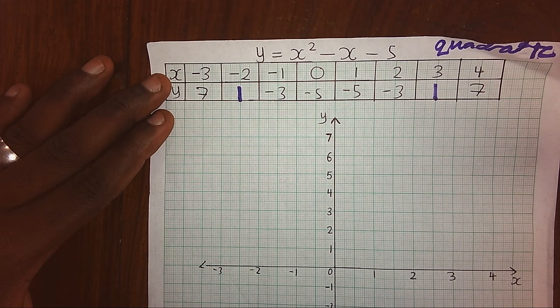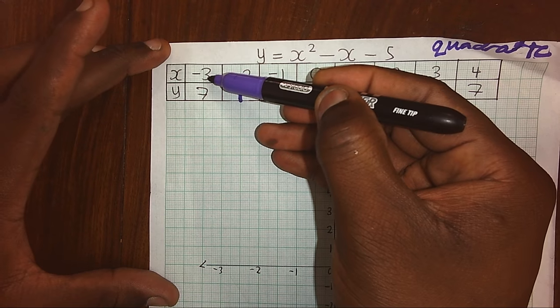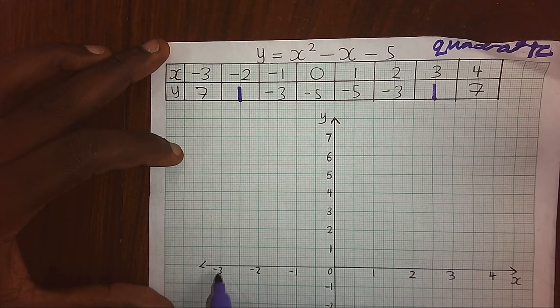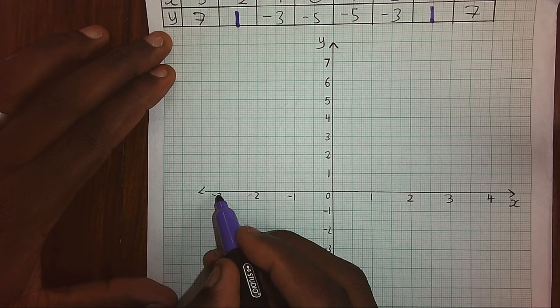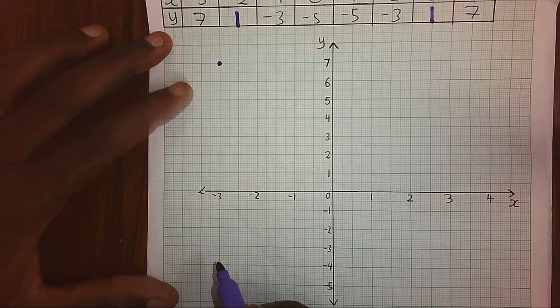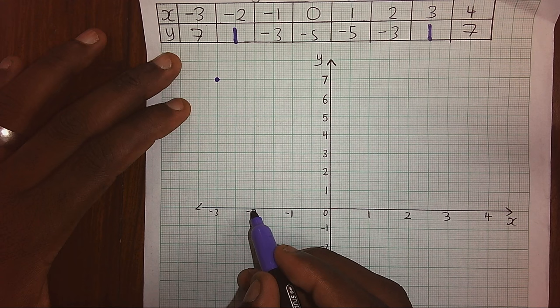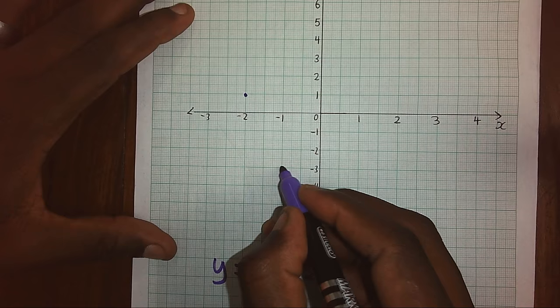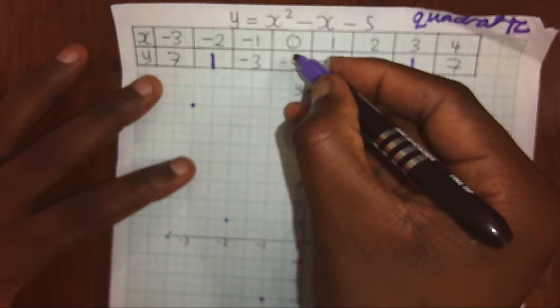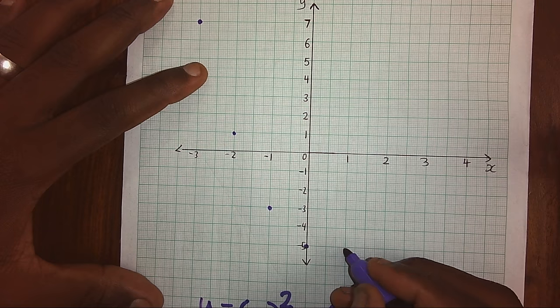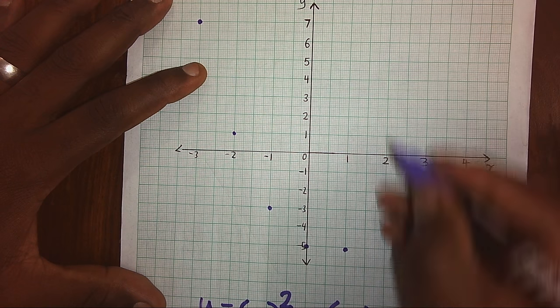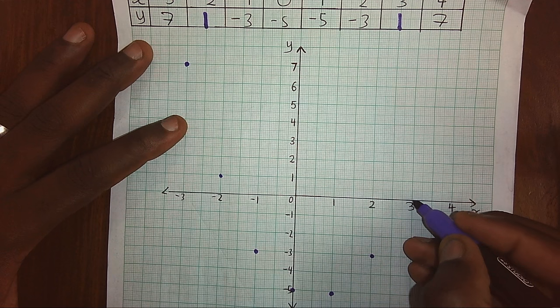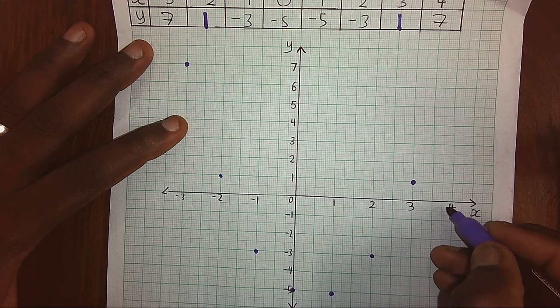After getting your values, how do we plot the points? We are given x is negative 3, y is 7. x is negative 3 is here, we go up to y is 7. At negative 2, we go up to 1. At negative 1, we drop down to negative 3. At 0, we drop down to 5. At 1, we drop down to 5. At 2, we have negative 3. At 3, we have 1. And at 4, we have 7.